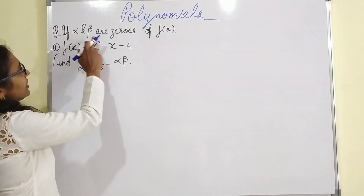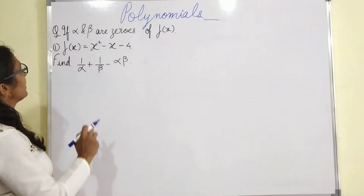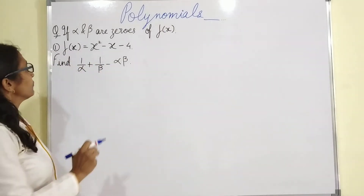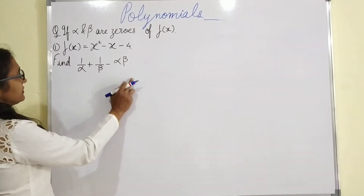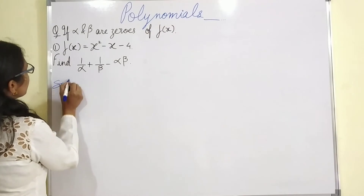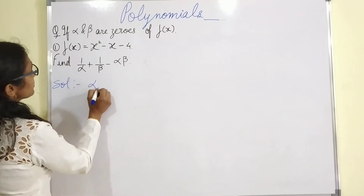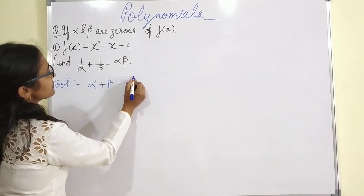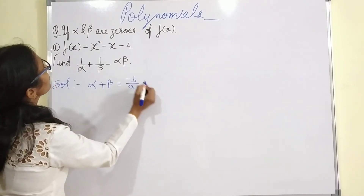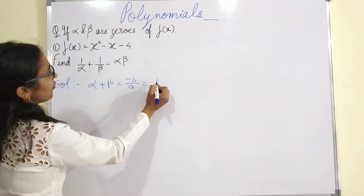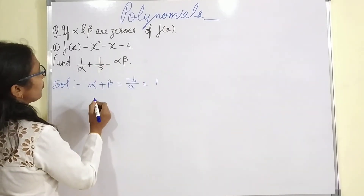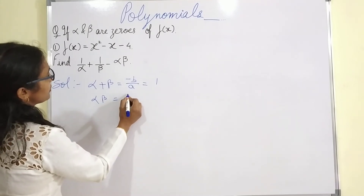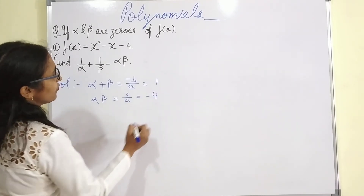The next question: if alpha and beta are zeros of f(x) = x squared − x − 4, find the value of the given expression. In this question, the sum of the zeros is −b/a, so the value is −(−1)/1 = 1. And the product of the zeros is c/a, which is −4.